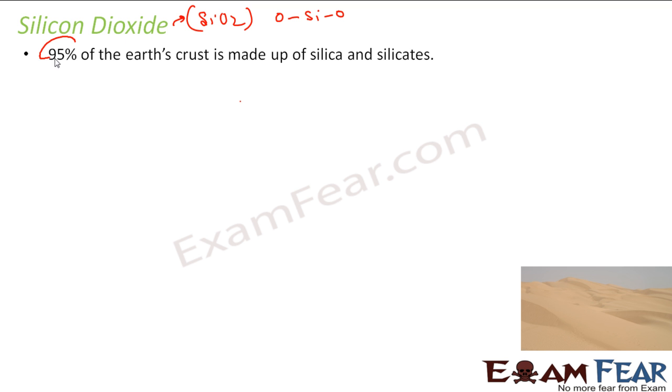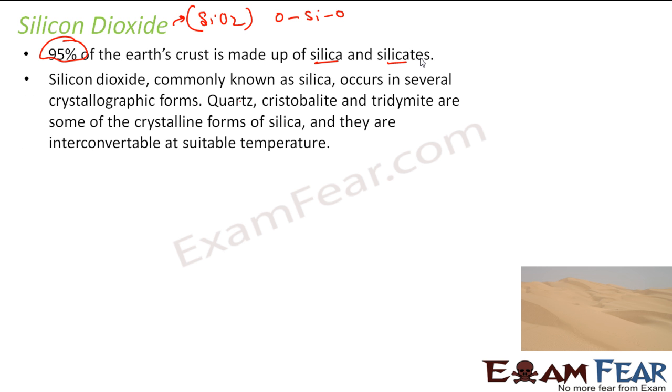95% of the earth's crust is made of silica and silicates. Silicon dioxide is known as silica, and it occurs in various crystallographic forms. Quartz, cristobalite, and tridymite are some of the crystalline forms of silica.